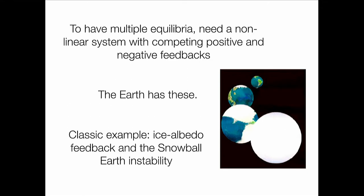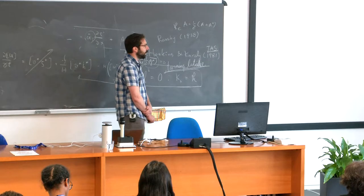Multiple equilibria: a system with multiple stable states is a nonlinear system, almost by definition. A linear system — if we put in the boundary conditions, we get an answer. To have multiple answers, we're going to need some competition between positive and negative feedbacks. The Earth has such competitions, and the simplest and most classic example of a positive feedback in the Earth system is the so-called ice-albedo feedback. In essence, ice and snow tend to exist in places where it's cold and they tend to be bright, so ice and snow-covered surfaces reflect a lot of sunlight and tend to remain cold because they're bright.